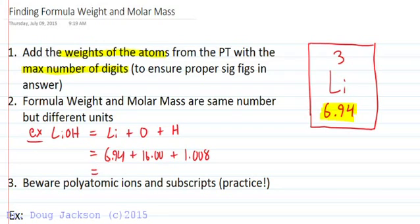When we add those together we get 23.948, rounded to 23.95 to account for the significant figures limited by the hundredths place of both lithium and oxygen. For formula weight we would use units of atomic mass units, lowercase u, or Daltons. They mean the same thing.